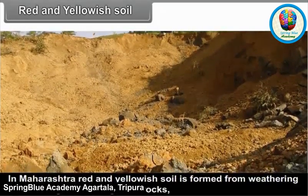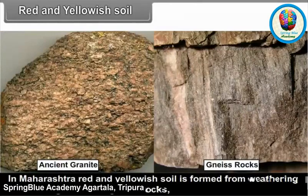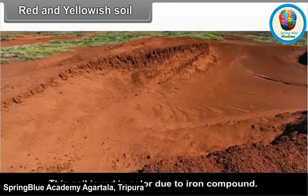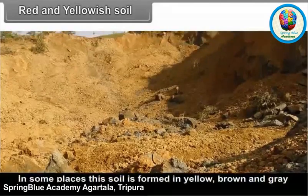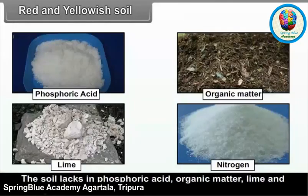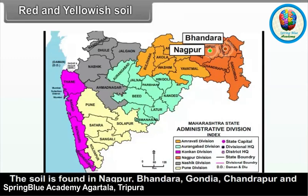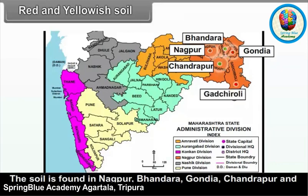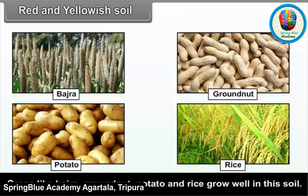Red and Yellowish Soil: In Maharashtra, red and yellowish soil is formed from weathering of ancient granite and gneiss rocks. This soil is red in color due to iron compounds. In some places, this soil is found in yellow, brown and grey colors. The soil lacks phosphoric acid, organic matter, lime and nitrogen. The soil is found in Nagpur, Bhandara, Gondiya, Chandrapur and Gadchiroli districts. Crops like bajra, groundnut, potato and rice grow well in this soil.